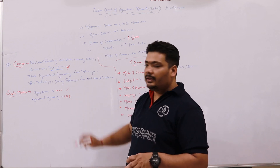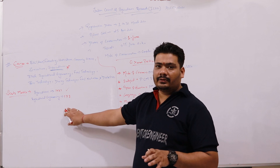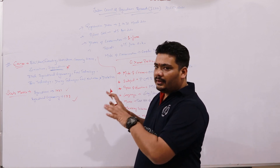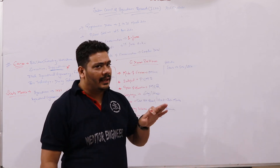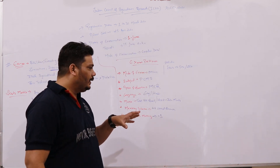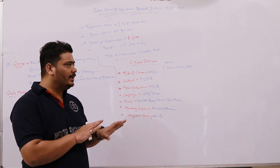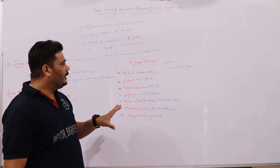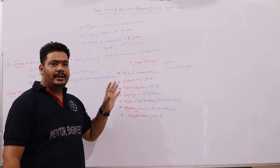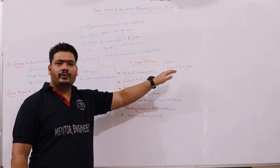If you talk about B.Tech in agriculture engineering, there are around 177 seats, and it is the most demanding course. The exam pattern is computer-based. The same course structure is prescribed across institutions.